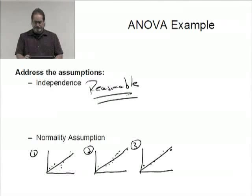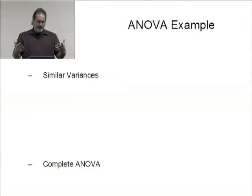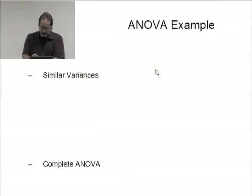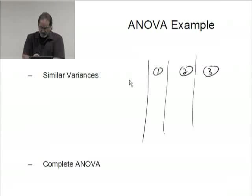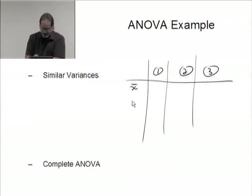Now assuming that we did feel okay on the normality assumption, I need to take a look at similar variances. What I'm going to do is list a bunch of information here: group one, group two, group three. I'm going to grab the means from each group, the standard deviation from each group, and I may as well while I'm there go ahead and get the sample median from each group. So I'm going to grab all three of those from each.